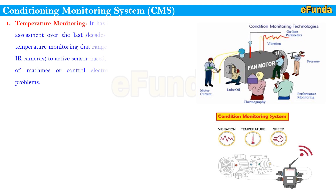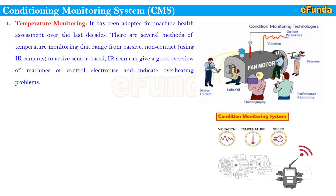First critical parameter is temperature monitoring, which has been adopted for machine health assessment over the last decades. There are several methods ranging from passive or non-contact type using IR cameras, which can give a good overview of machines or control electronics and indicate overheating problems. Contact measurement is very useful for early detection of lubrication-related problems.